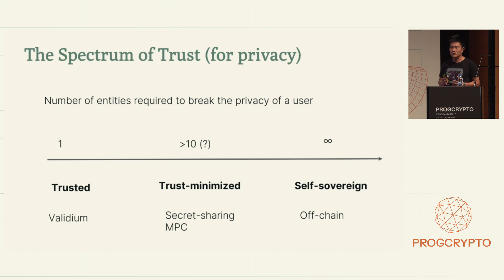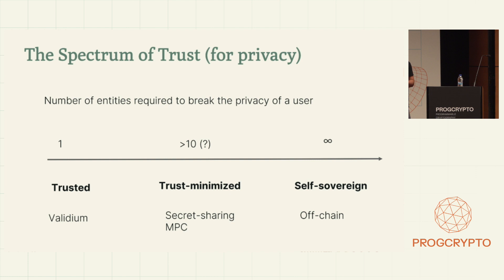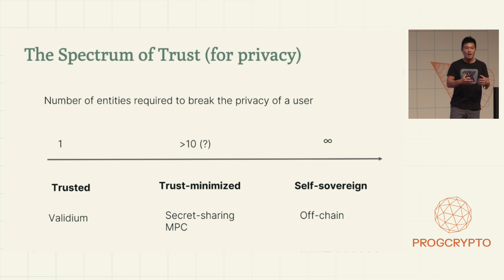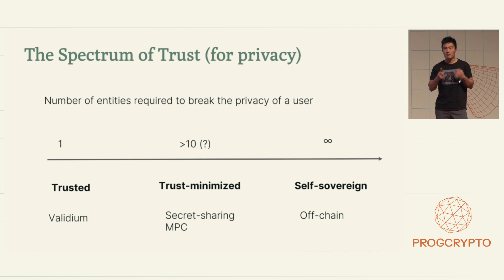Trust minimization is a spectrum. On the left-hand side, you have systems that require a central operator who may have access to user information — Facebook or Google being examples of these centralized solutions. On the right-hand side, we have something fully self-sovereign, where zero-knowledge proofs or two-party computation can help you both have control of your data, as well as prove certain properties about it or do computation jointly with others. In the middle is what I call trust-minimized solutions, where you don't necessarily have a central operator, but you have some type of threshold trust assumption that allows you to do more powerful computation over your data with this type of delegated trust.